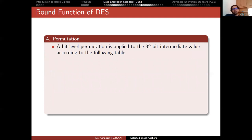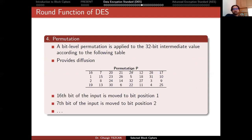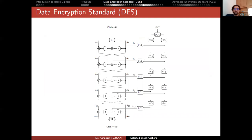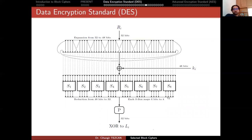The next layer is the permutation layer. A bit-level permutation is applied to the 32-bit intermediate value according to a table, and this provides diffusion. The 16th bit of the input is moved to bit position 1, the 7th bit is moved to bit position 2, and so on. So going back to the full picture: we have the key schedule with permutations PC1 and PC2, the expansion, the key XOR, and then the S-boxes and permutation — all as shown in the diagram.